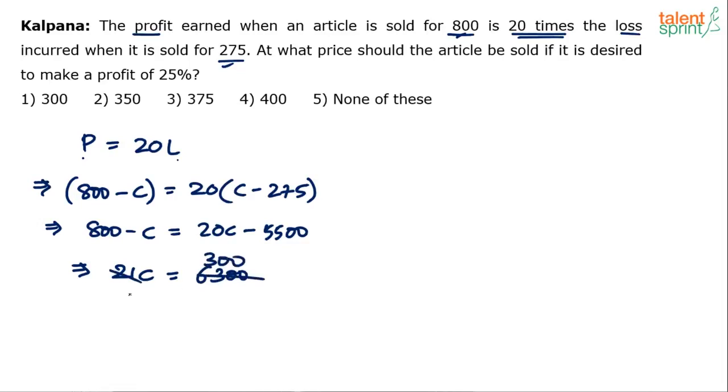6300 by 21 is 300. So cost price is 300. Now look at the question.